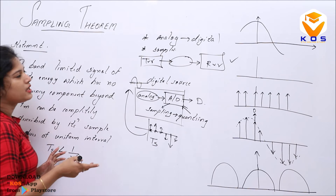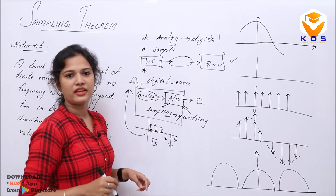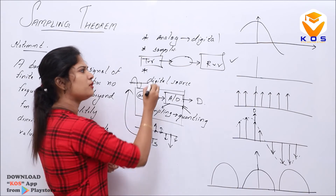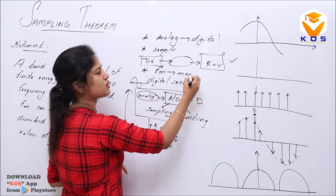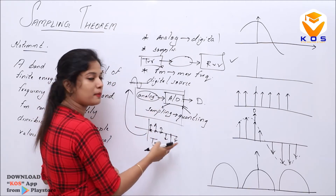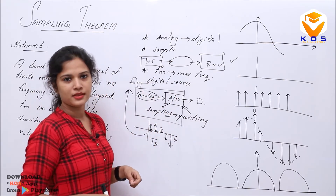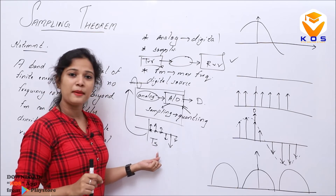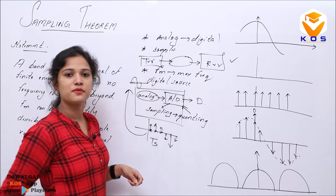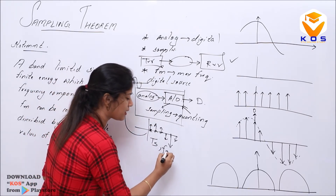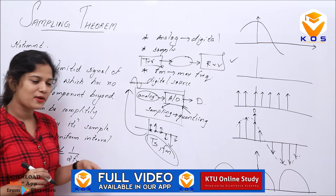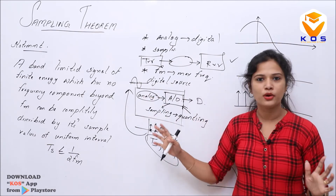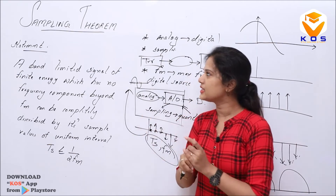Let's study the samples in terms of frequency. These samples actually depend on our original message signal's maximum frequency component. In our original signal, there is a maximum frequency f_m. These samples will depend on that maximum frequency. What we are going to learn is something called the Nyquist Criteria.